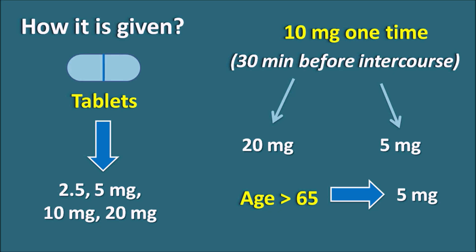In geriatric patients aged over 65, this drug should be started at a low dose of 5 mg. Thank you for watching this video.